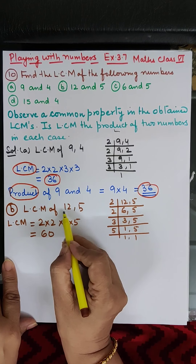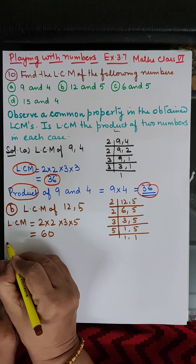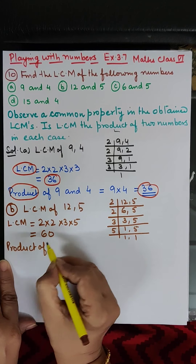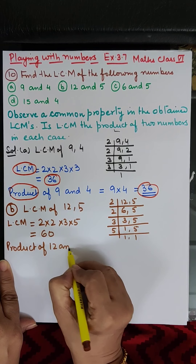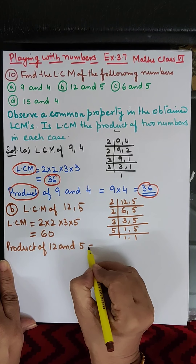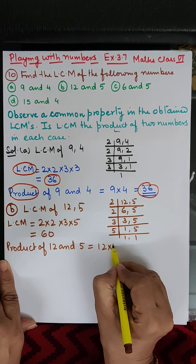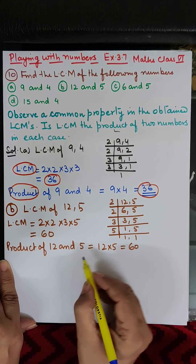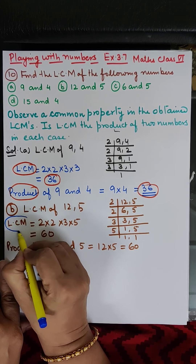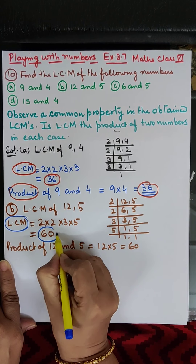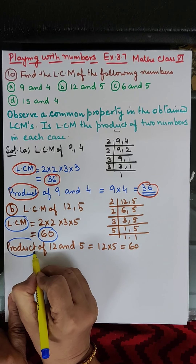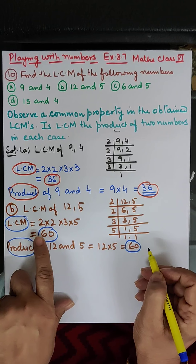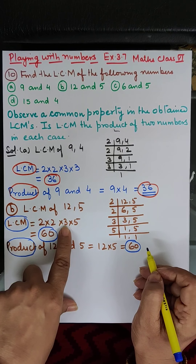Now let us take the product of 12 and 5. Product of twelve and five is twelve into five which is equal to sixty. So LCM is 60 and product is also 60.